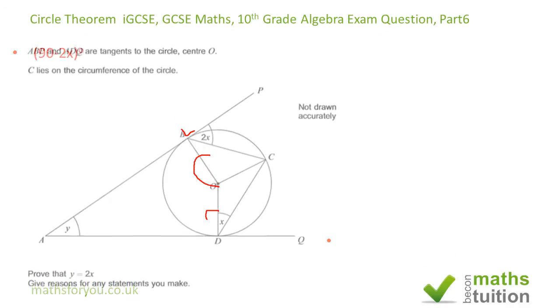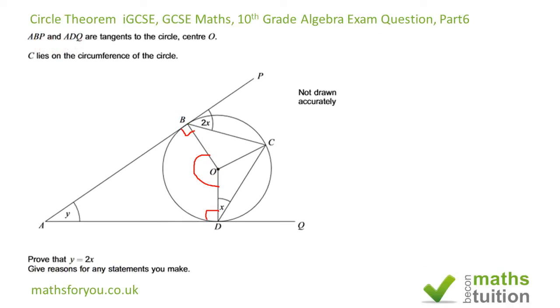Hello and welcome to this exercise on circle theorem. I apologize for my poor editing. The problem states that ABP and ADQ are tangents to the circle, C lies on the circle, and we need to prove that y equals 2x.